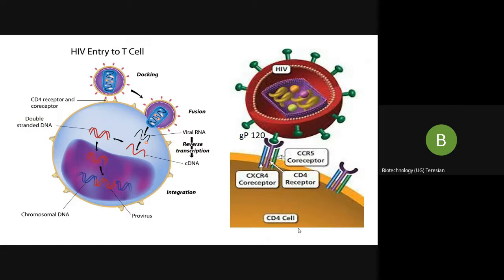Once they are complementarily fitted, CXCR4 or CCR5 tries to drag the HIV GP120 protein within the cell. The GP120 then pierces into the CD4 cells, and the GP120 — or the HIV envelope — fuses with the CD4 cell membrane.